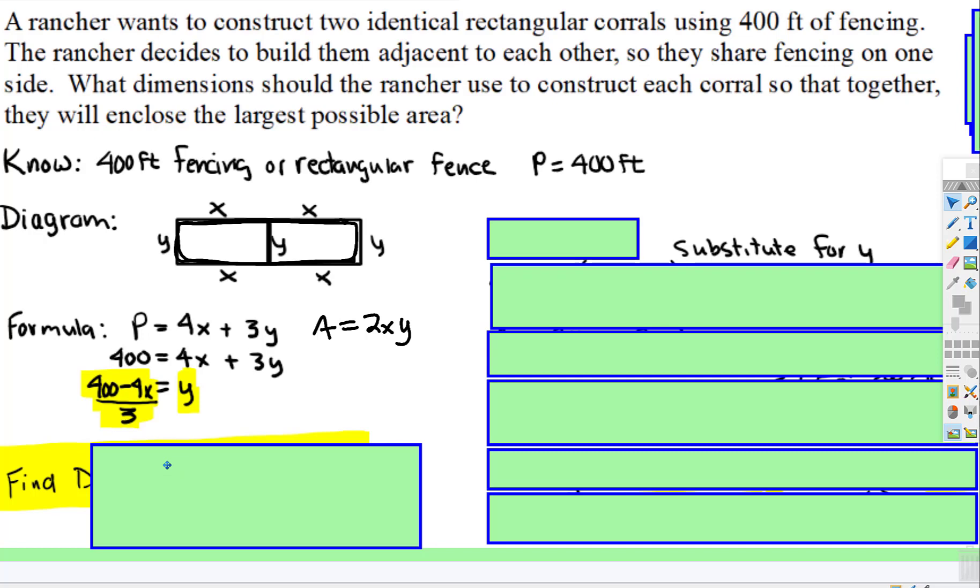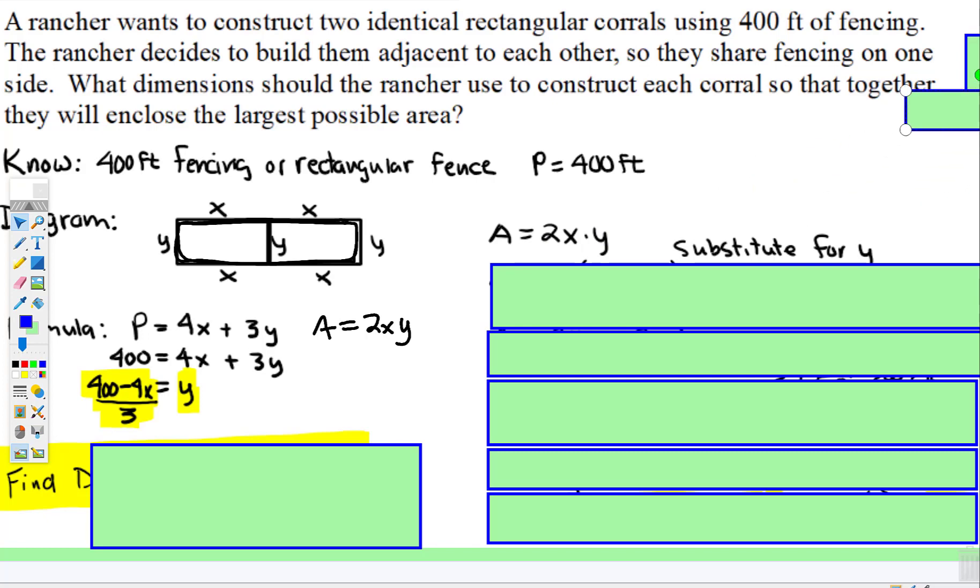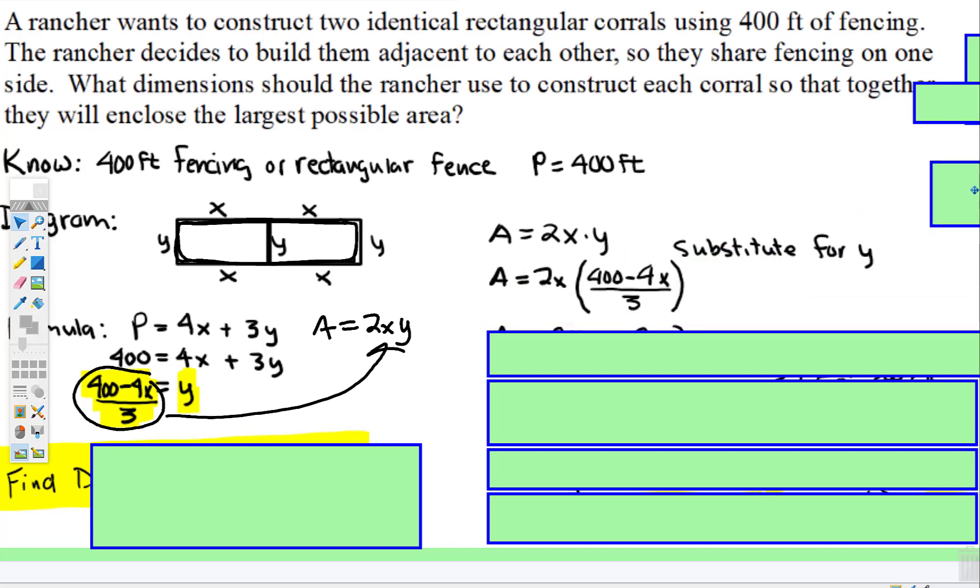And then, so since area is 2x times y, remember, when we find the derivative, when we differentiate, we only want there to be one variable, so we have to substitute this in for the y, which is what I did right here. And then you go ahead and multiply that out. And I turned it into two different fractions, because we're going to take the derivative of this, and then set that equal to 0.